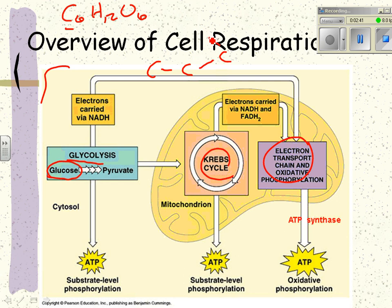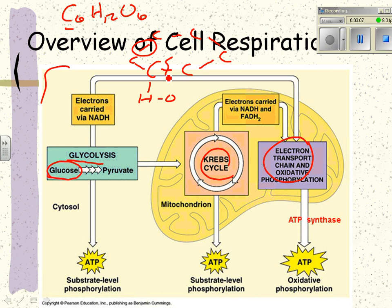Glucose is generally in some kind of ring structure like this. What do those lines represent? Chemical bonds — covalent bonds. With H's and O's attached to those, those represent chemical or covalent bonds. As those covalent bonds are broken slowly — it takes time — the first thing is glucose is converted into something called pyruvate.